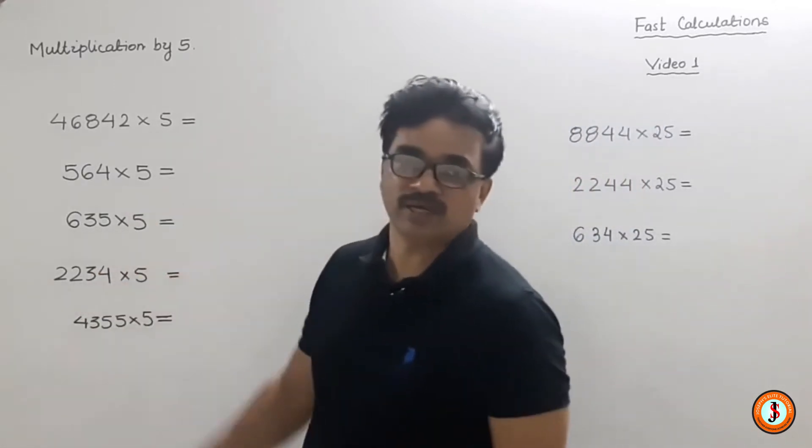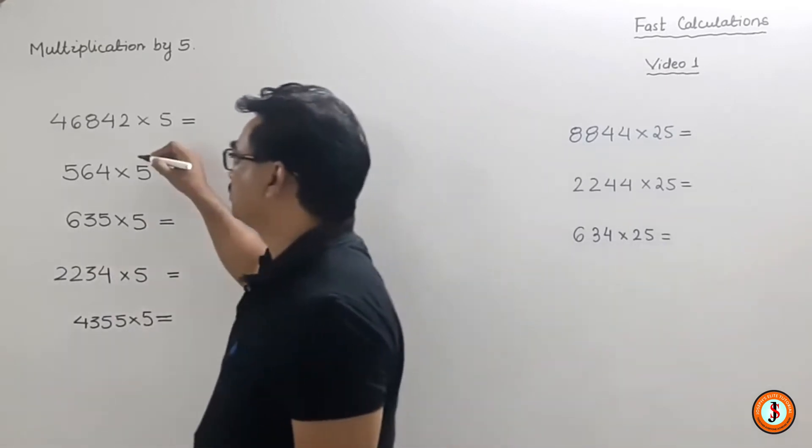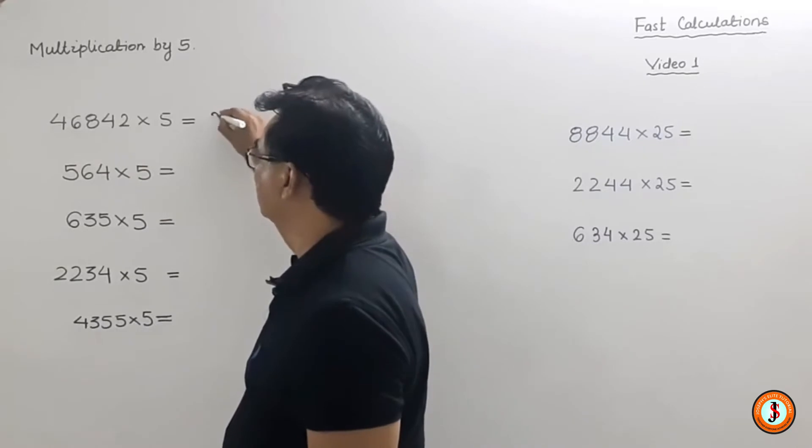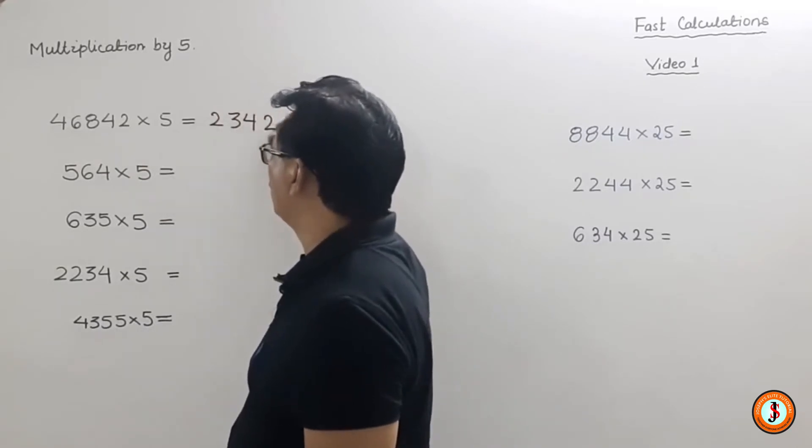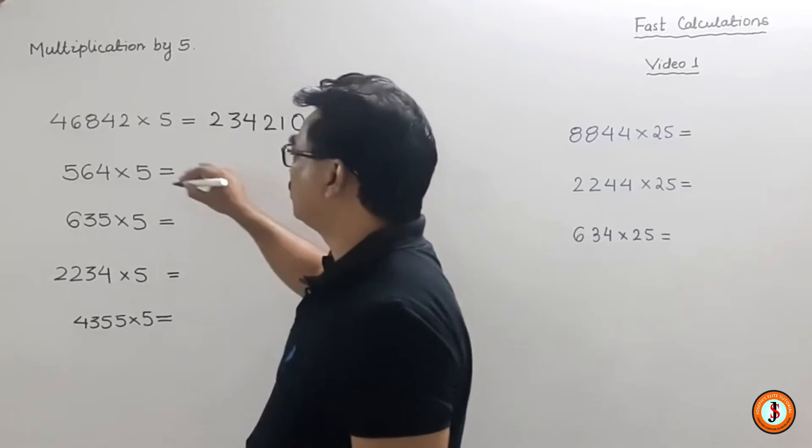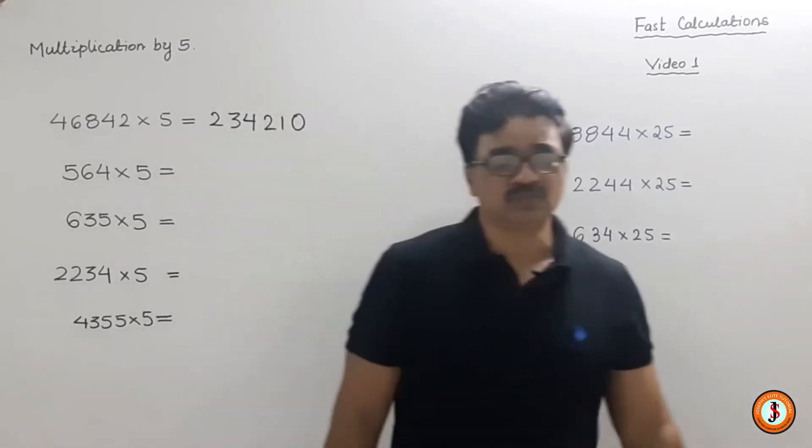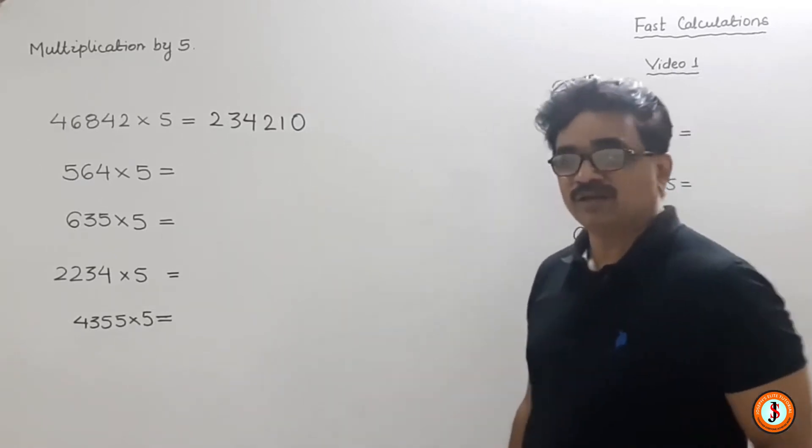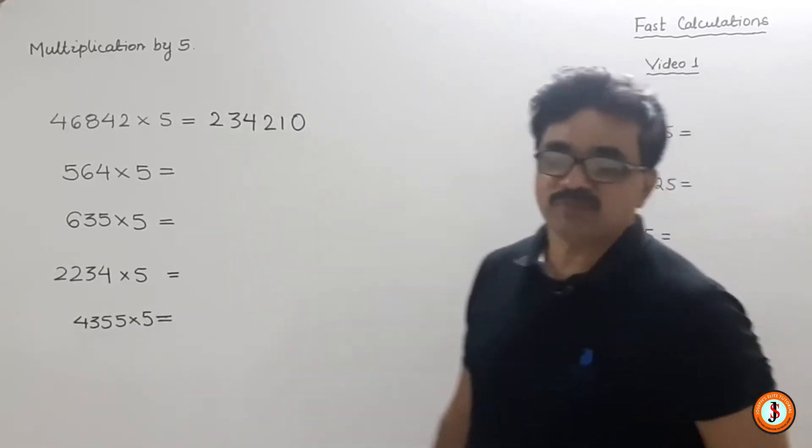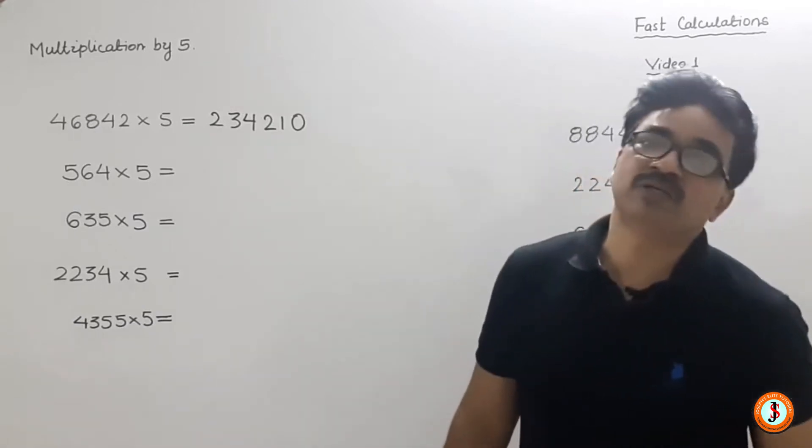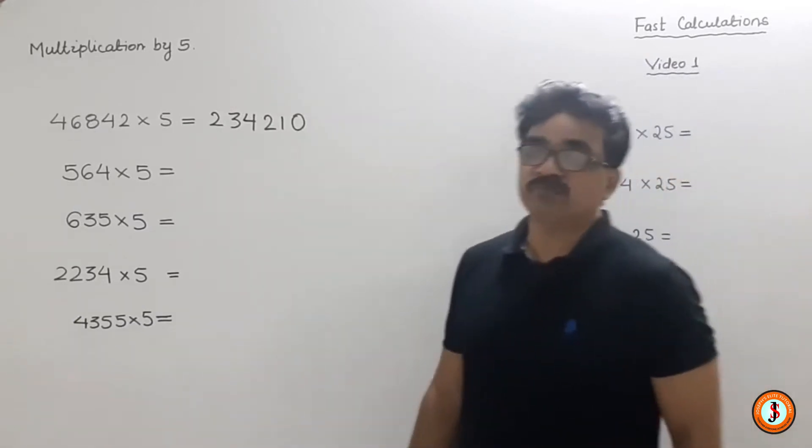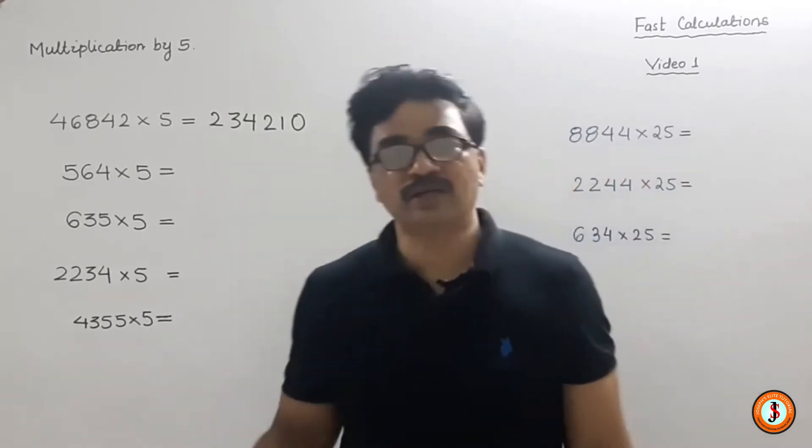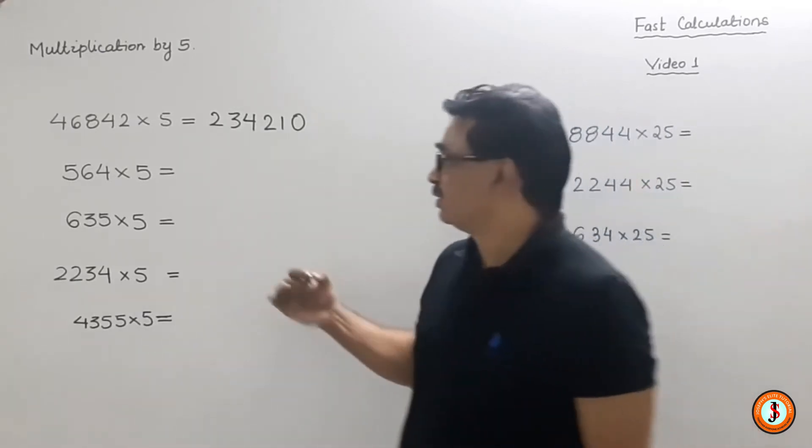First, to multiply by 5, you divide by 2. Let's divide by 2. Since all these are even numbers, we can divide them. We can write this as 2, 3, 4, 2, 1, 0. And when you divide, just add a zero at the end. You might ask why - instead of multiplying, you divided and added a zero. Why do we do this? Very simple. Multiplying by 5 or multiplying by 10 divided by 2 is the same thing. When you multiply by 10, you add a zero, which is the same as dividing by 2.